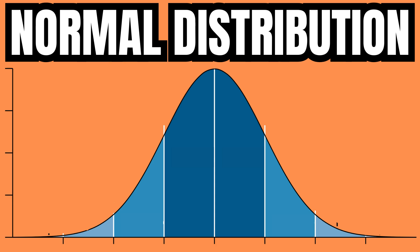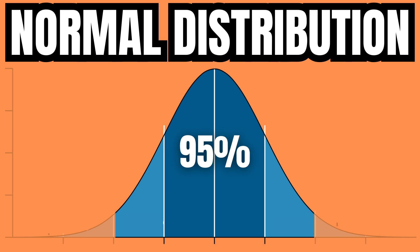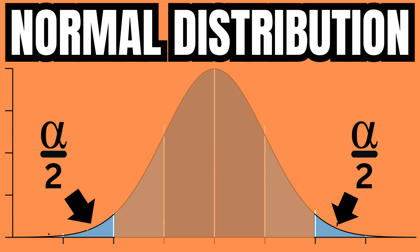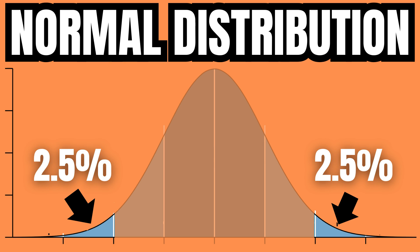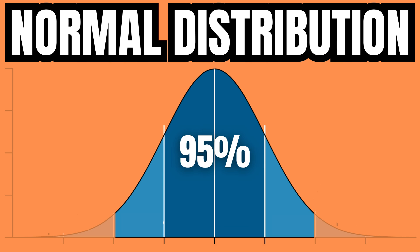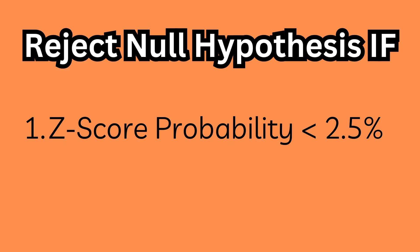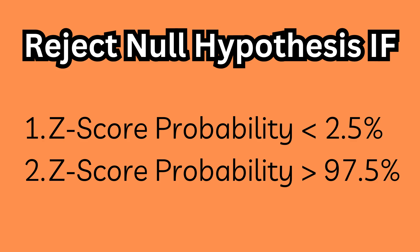As we are dealing with a normal distribution, the confidence interval — or c — is the area in the middle of the curve. Therefore the significance level, or alpha, exists in equal proportions on both sides of the curve. The position of the z-score has to fall outside of this confidence interval in order for us to reject the null hypothesis — in other words, the probability associated with the z-score has to be less than 2.5 percent or more than 97.5 percent.